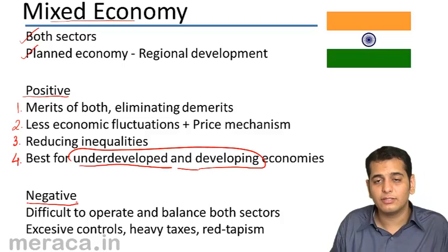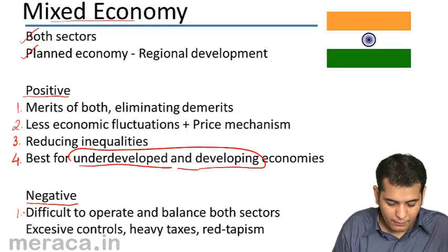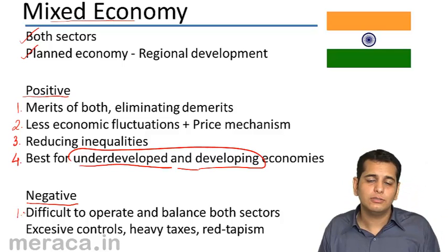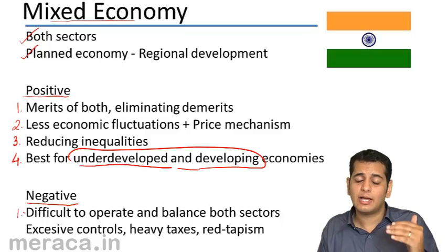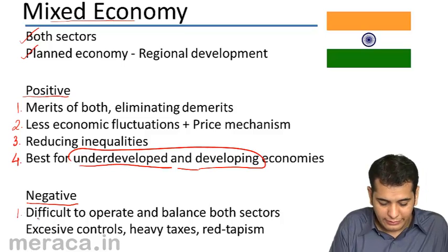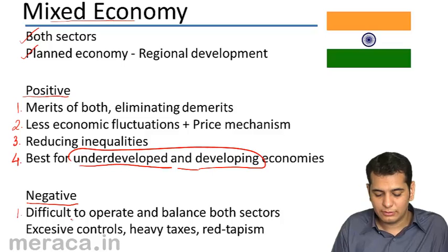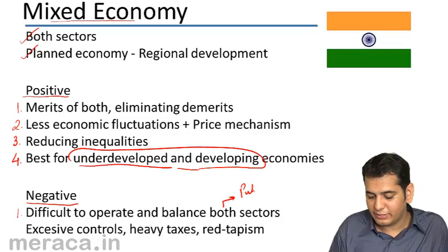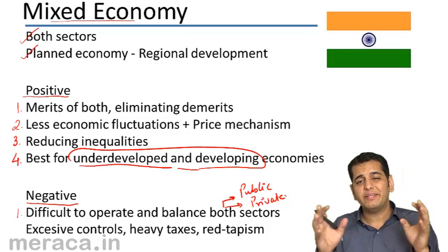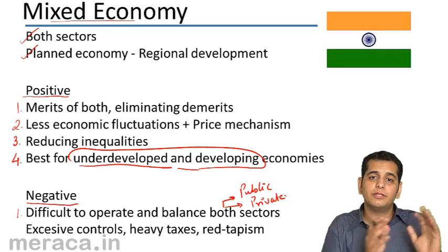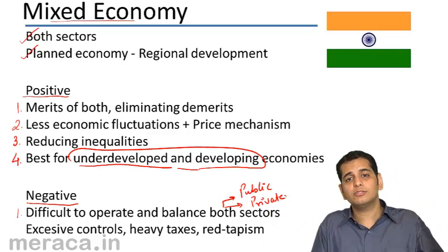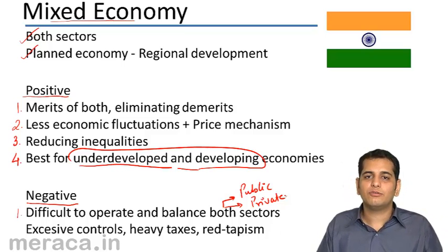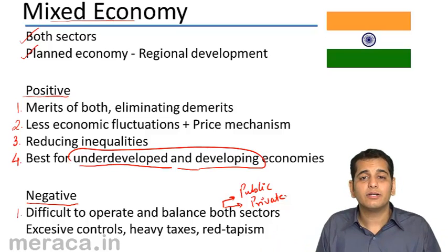Now let's look at the negatives of a mixed economy. Although it eliminates the negatives of both the capitalist and socialist approaches, a mixed economy has its own problems. The first is that it is very difficult to operate and balance both sectors. It becomes very difficult to determine which industries should be allocated to the private sector, which should be maintained by the government, and what the respective roles of each sector are in economic development.